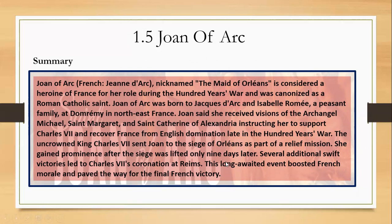We don't have the entire chapter here; rather a small extract is taken from the whole play. The part taken is how Joan of Arc goes on talking to Robert, who is the French general of the army, in order to take permission to go to Chinon to fight against the English.